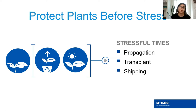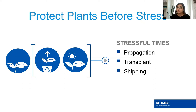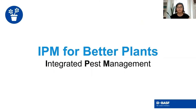There are key times in production when you should be making preventative fungicide applications. These are the times when plants are most stressed and most susceptible: young tender plant tissue during propagation, at transplant, anytime you're stepping up plants into larger pots, and prior to shipping. These are also times when plants are being moved and handled, increasing the chances of injury and pathogen spread.